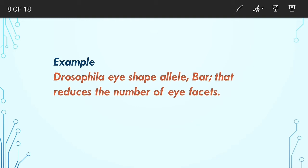An example of duplication is the Bar eye type in Drosophila. The wild-type compound eye of the fruit fly is composed of about 750 identical units called ommatidia or facets, each comprised of 20 cells with 8 photoreceptor cells. The Bar phenotype results from duplication of the 16A locus of the X chromosome. The Bar heterozygote has about 350 facets, while the Bar homozygote has about 70, reducing and changing the shape of the eye.